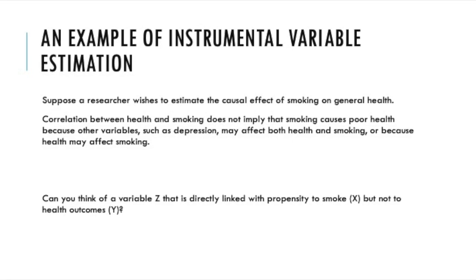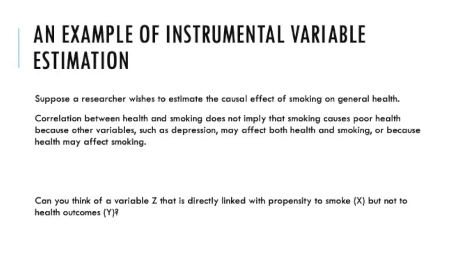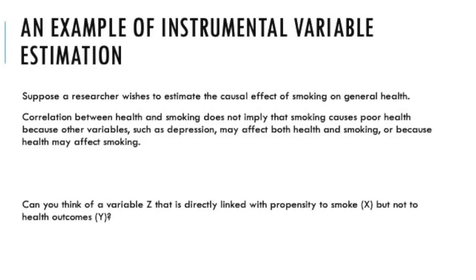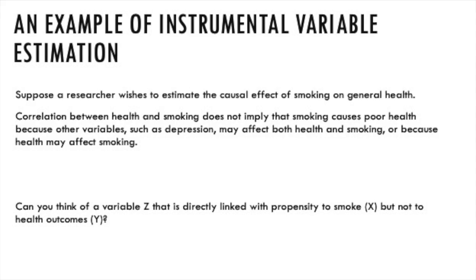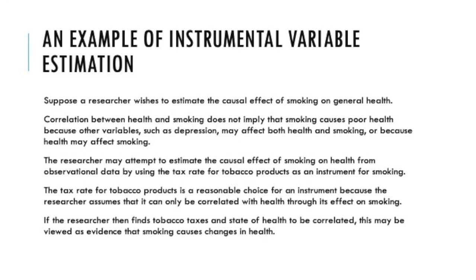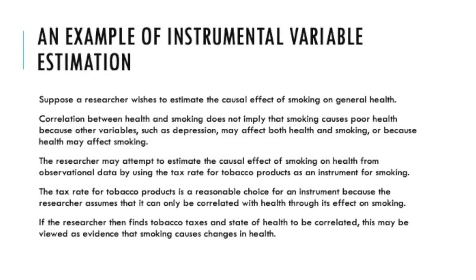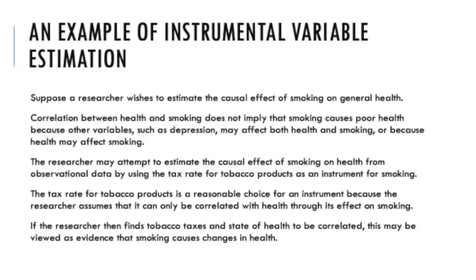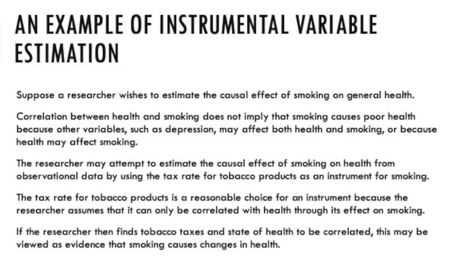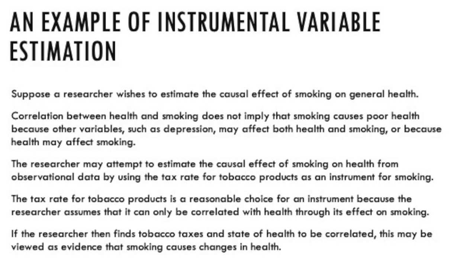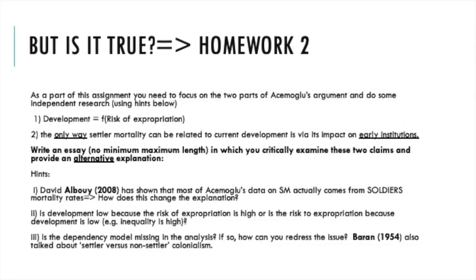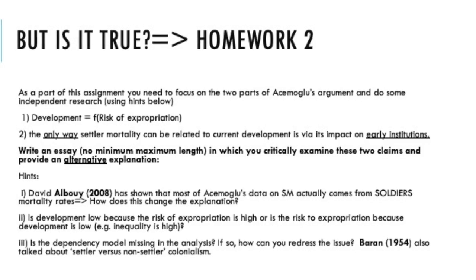But as I am sure you have already figured, this will open a new debate. Other statisticians can argue that there could be thousands of ways that Z could be either directly linked to Y or not be linked at all. For example, statisticians who oppose the use of the tax rate as a good IV will argue that states with higher tobacco tax rates are generally more liberal and hence more likely to have better health outcomes to begin with. This will be relevant for us as we return to Acemoglu's study and examine his instrumental variable. In the second assignment in this course, I will ask you to look at other plausible explanations for that precise link.